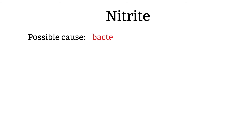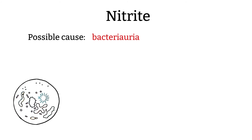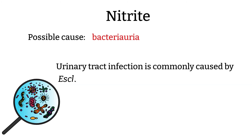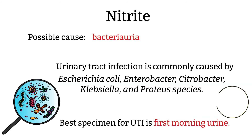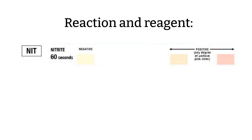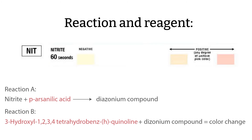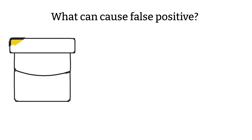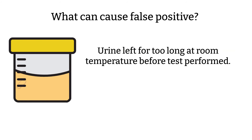Nitrite. Nitrite is used for early detection of asymptomatic bacteriuria. Here are some common organisms that can cause urinary tract infections. The best specimen of choice for suspicion of UTI is the first morning urine because it is the most concentrated. Nitrite test results are read at 60 seconds, though this may vary a little depending on the manufacturer. If the pad changes to a pink color, that indicates a positive test. Here are the reactions and reagents for this test. For false positive test results, if the urine is left for too long at room temperature before the test is performed, this can give false positive results because during that time, microorganisms can grow in the specimen and generate nitrite.